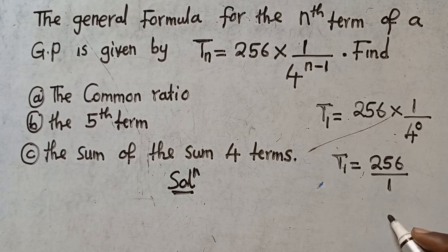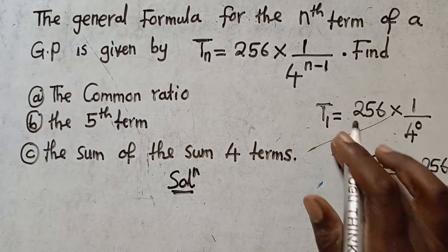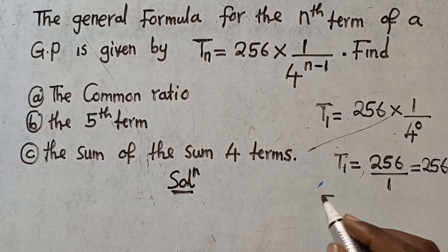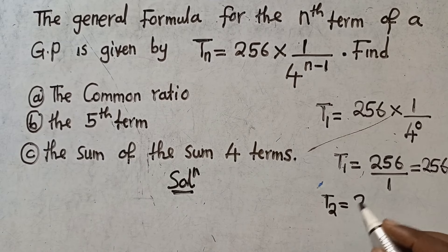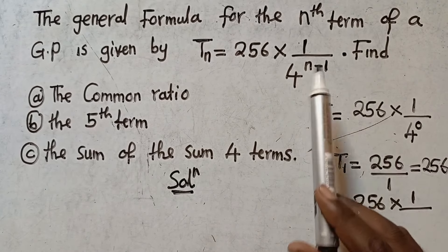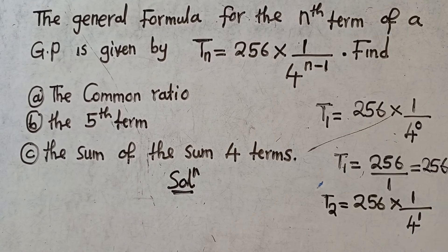Anything to the power zero is 1, so the first term equals 256 times 1, which is 256. So the first term is 256. Now I need the second term. To find the second term, I substitute n = 2 into the formula. So the second term equals 256 multiplied by one over four to the power of two minus one, which is four to the power one — just 4.